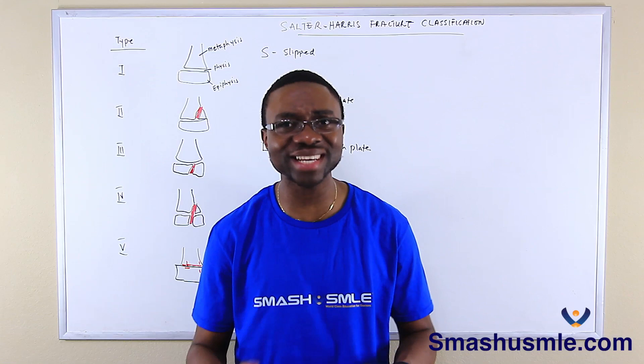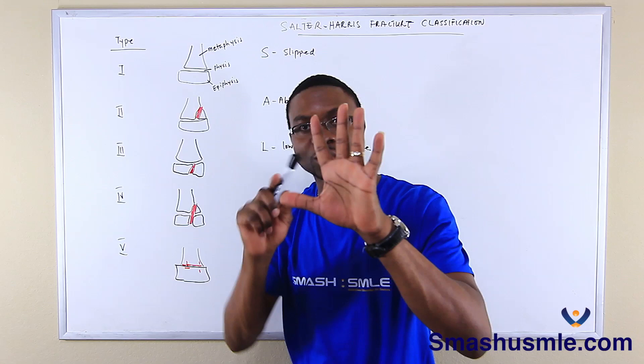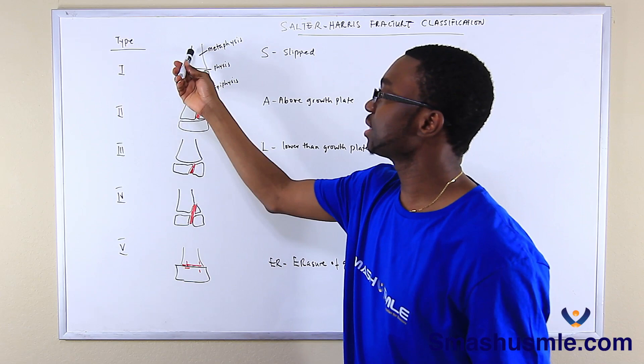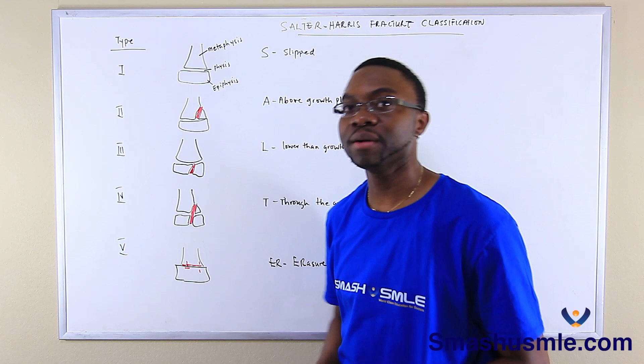First, there are five of them: one, two, three, four, five. And you just have to know the parts of the bone. The top part is the metaphysis, the growth plate is the physis, and the epiphysis is basically the distal part of the bone.